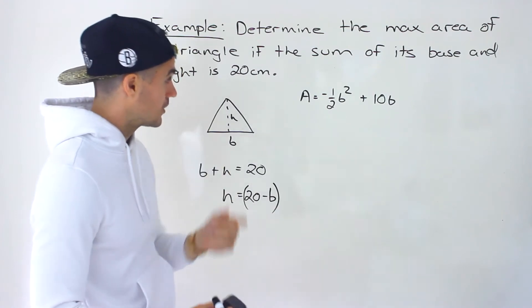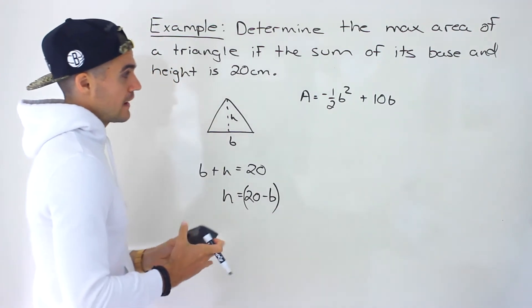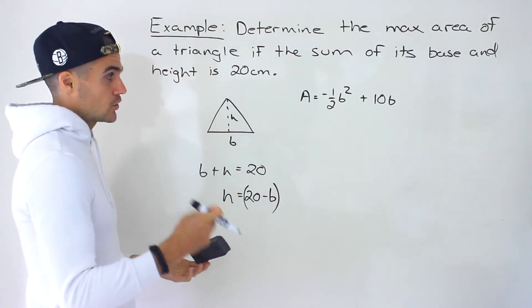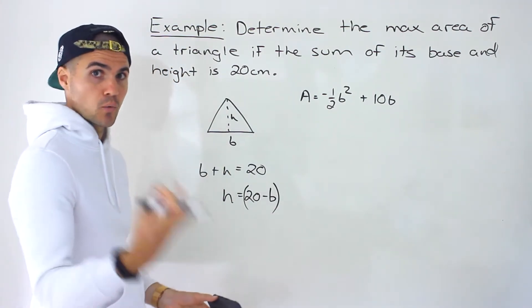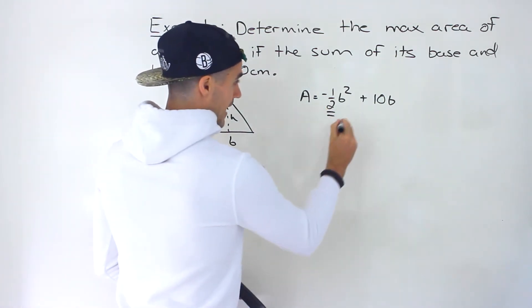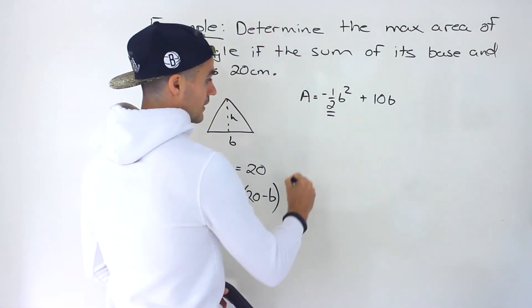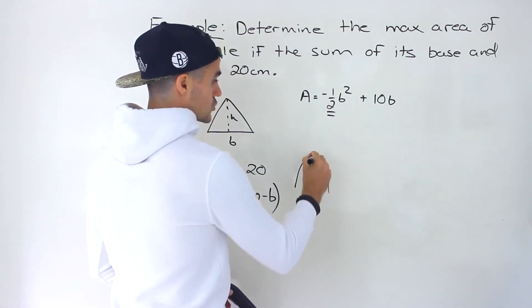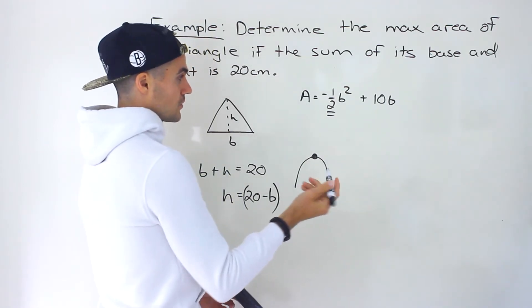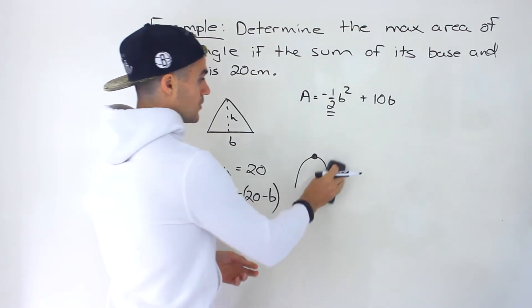From here we can find the maximum of this quadratic. Notice the quadratic has a maximum because the leading coefficient (a value) is negative, so the parabola opens downward and will have a maximum point.